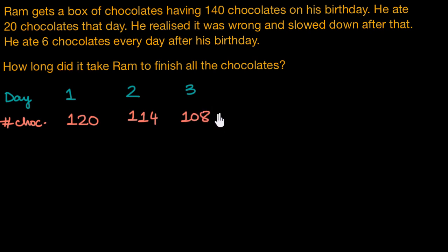So what we need to figure out is how many days it takes Ram to finish off all his chocolates, meaning by the end of which day would Ram have 0 chocolates in his box. One of the most straightforward and direct ways to think about it is we can keep on subtracting 6 chocolates every day till we get here.